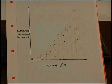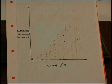Let us build the velocity against time graph. Remember, the velocity is shown by the distance between the dots per second.